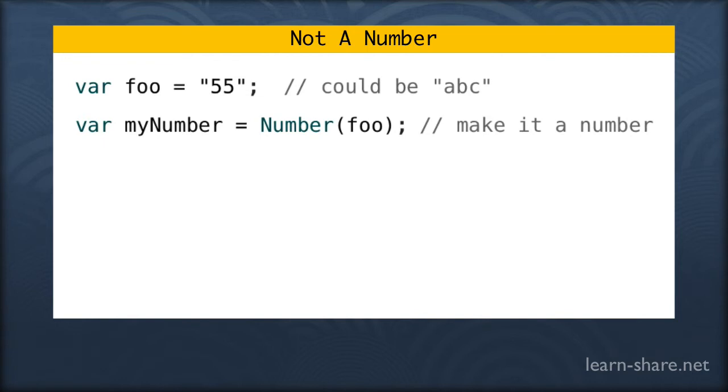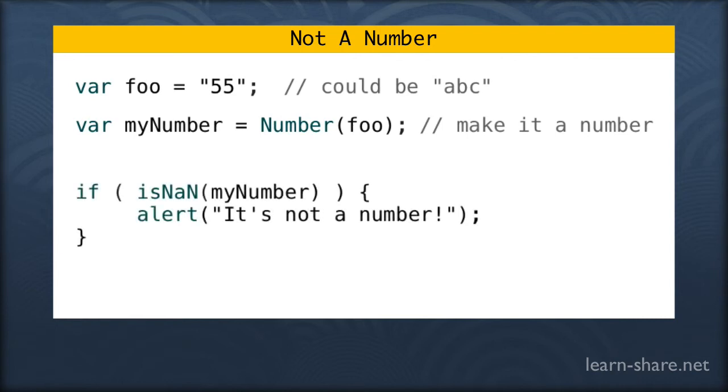The next thing we need to do is checking, and we're using another built-in JavaScript function called isNaN, is not a number. So isNaN is a built-in JavaScript function that accepts a variable and will tell us is this a number or is this not a number.